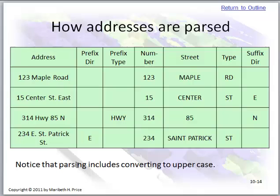How are they parsed? Notice that parsing includes converting to upper case. We take 125 Maple Road — the number gets put in, the street gets put in, and the suffix. The suffix direction is included because it is included in the initial address. The good thing is a lot of this is done in ArcGIS for us — we don't have to worry about it too much once we get it set up the way we like.